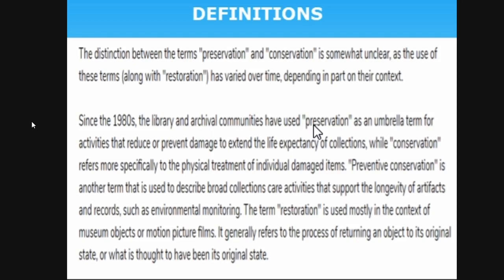The things done to increase the life expectancy of a particular document or collection is called preservation. Conservation is specifically referred to the treatment of damaged items — for example, a book that is already damaged. You put cello tape or gum to bring it back to the best shape. That part is called conservation.